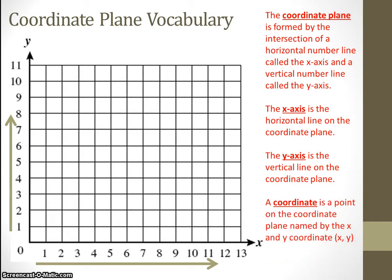A coordinate is a point on the coordinate plane named by the x and y coordinate. And when you name it, you name it in that order, x and then y. Here are some examples of some different coordinates. Every single coordinate has its very own name. Therefore, you should never have a coordinate in two different places that have the same name.